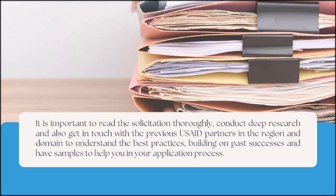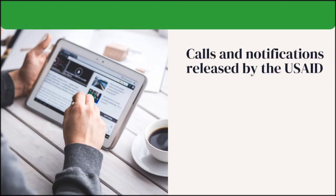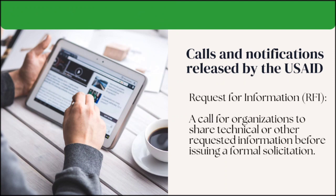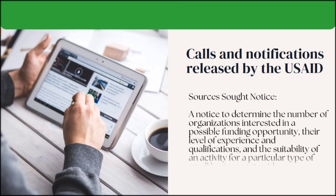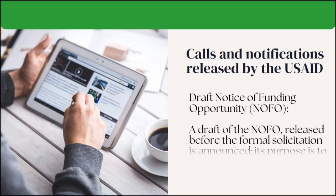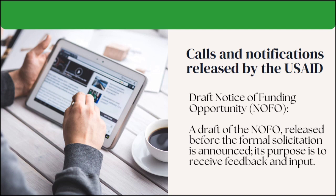Let's discuss the calls and notifications released by USAID. Number one: Request for Information or RFI — a call for organizations to share technical or other requested information before issuing a formal solicitation. Number two: Pre-solicitation notice — a notification that the agency will be issuing a solicitation. Number three: Sources sought notice — a notice to determine the number of organizations interested in a possible funding opportunity, their level of experience and qualifications, and the suitability of an activity for a particular type of small business set-aside. Number four: Draft Notice of Funding Opportunity or NOFO — a draft of the NOFO released before the formal solicitation is announced, with the purpose of receiving feedback and input.